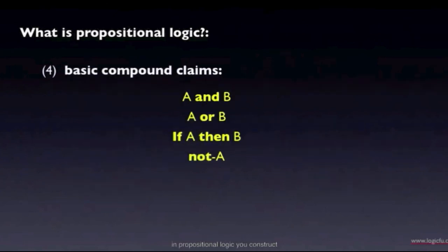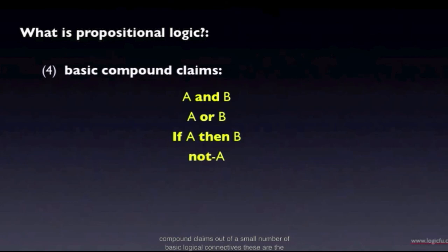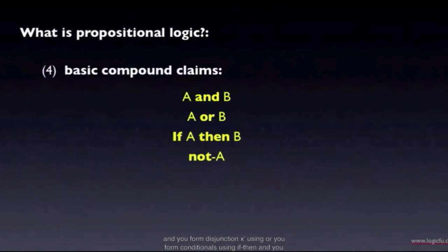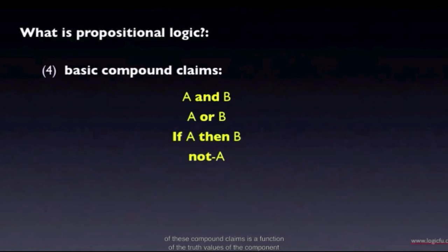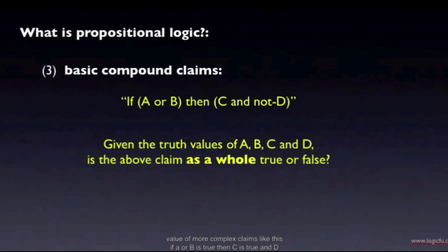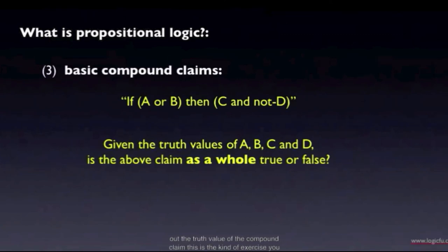In propositional logic, you construct compound claims out of a small number of basic logical connectives. You form conjunctions using AND, disjunctions using OR, conditionals using IF-THEN, and contradictories using NOT. Once you know the rules for how the truth value of compound claims is a function of the truth values of the component claims, you can evaluate more complex claims like: 'If A or B is true, then C is true and D is not true.' Given the truth values of all component claims, you can work out the truth value of the compound claim.